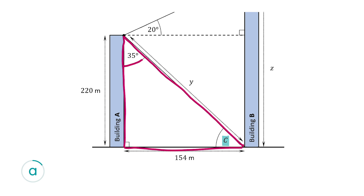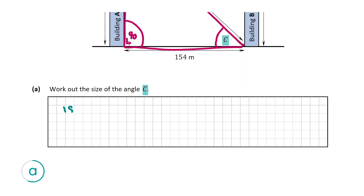We know that this angle is 35 degrees because we're told so in the question, and C must be the last angle in the triangle. So to find C we're going to do 180 degrees — because there are 180 degrees in every triangle — take away 90, take away 35. So 180 minus 90 gives us 90, minus 35 gives us 55 degrees. So C is equal to 55 degrees.